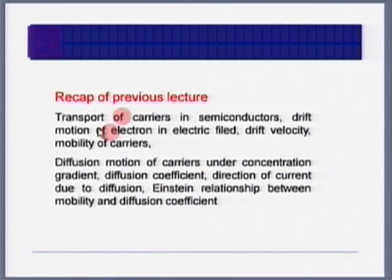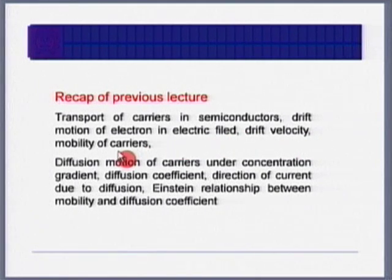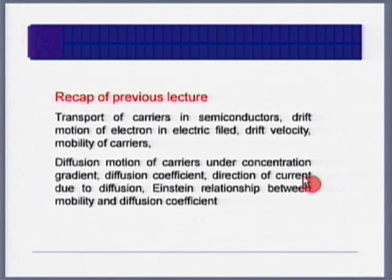What we discussed yesterday is transport of carriers in semiconductors: drift — motion under electric field — diffusion, drift velocity, mobility of carriers, diffusion motion under concentration gradient, diffusion coefficient, and direction of current due to drift and diffusion. If you know the direction of the electric field, you should be able to find the direction of current. If you know the concentration gradient profile, you should be able to find the direction of diffusion current.